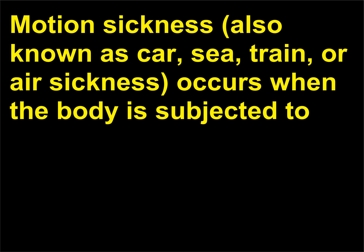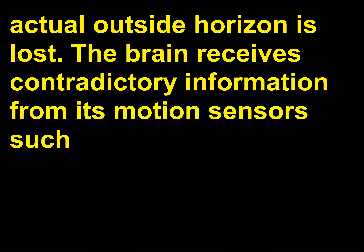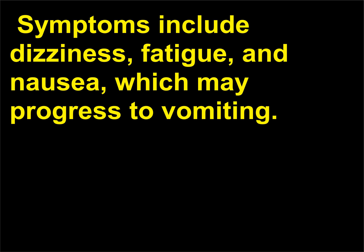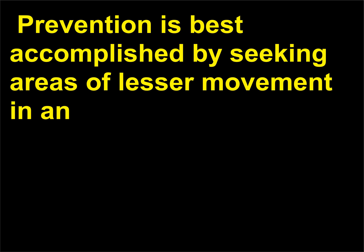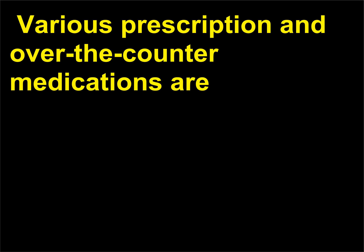Motion sickness, also known as car, sea, train, or air sickness, occurs when the body is subjected to accelerations of movement in different directions, or under conditions where visual contact with the actual outside horizon is lost. The brain receives contradictory information from its motion sensors, such as the eyes or semicircular canals in the inner ears, that provide information about body position. Symptoms include dizziness, fatigue, and nausea, which may progress to vomiting. Prevention is best accomplished by seeking areas of lesser movement in an interior location of a ship, or by facing forward and looking outside an airplane. Various prescription and over-the-counter medications are available that may prevent or limit the symptoms of motion sickness.